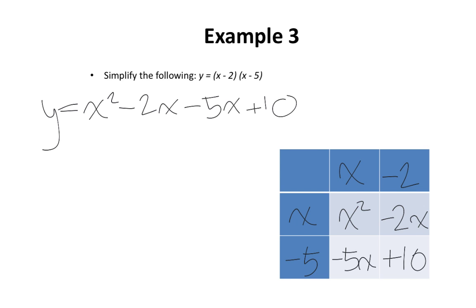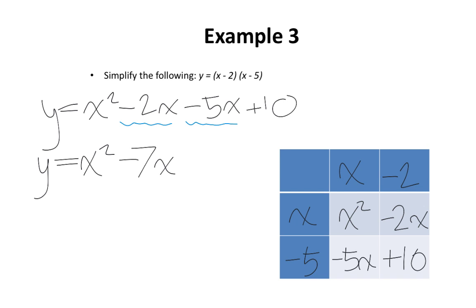I'm going to identify my like terms — negative 2x and negative 5x. Let's go ahead and collect them. Everything else stays the same. Negative 2x subtract 5x is negative 7x. And the plus 10 stays the same. So my final answer is y equals x squared minus 7x plus 10.